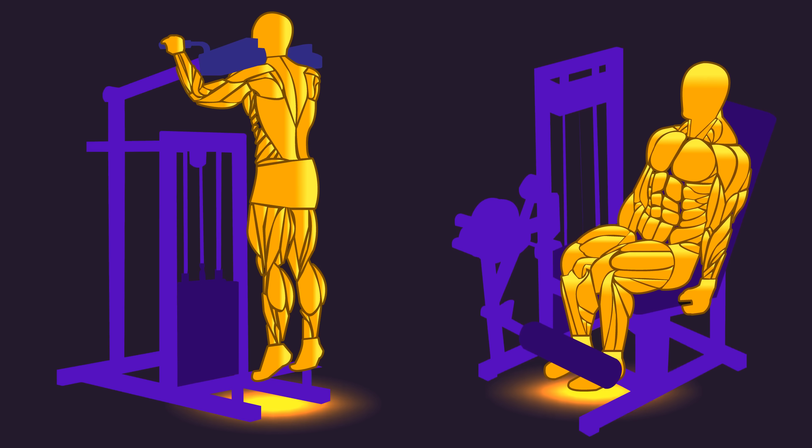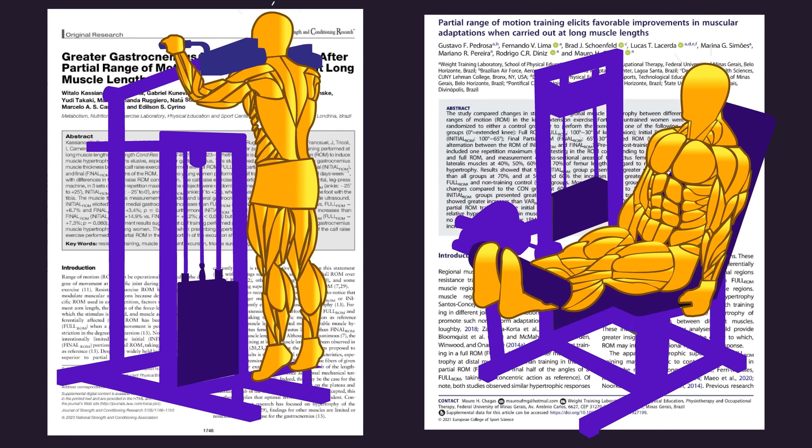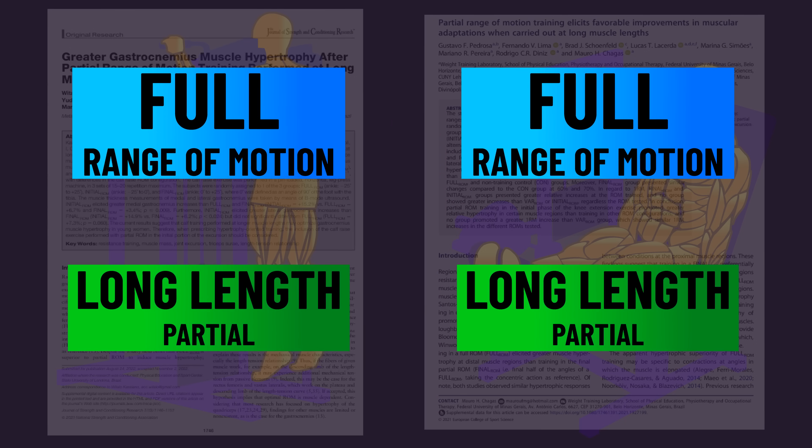For example, both calf raises and leg extensions tend to be hardest at the top shortened position. Two studies on these exercises, although conducted on untrained individuals, found that long length partials produced more overall growth than a full range of motion.